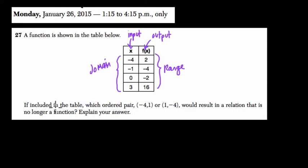If included in the table, which ordered pair, negative 4, 1, or 1, negative 4, would result in a relation that is no longer a function? Explain your reasoning. Okay, so we want to choose the point that essentially takes this relationship in this table and makes sure it's not a function. Or in other words, they're saying it's already a function and we want to break it.